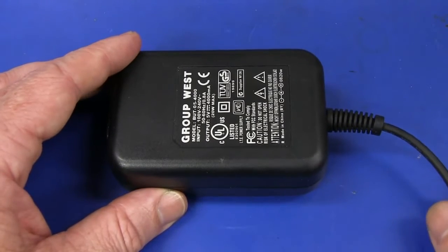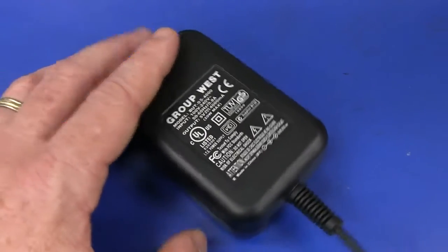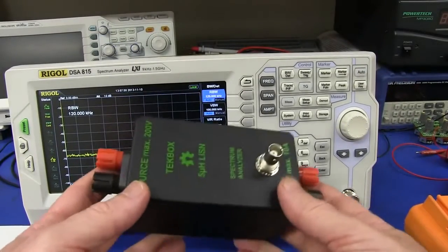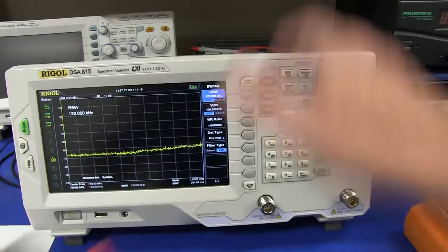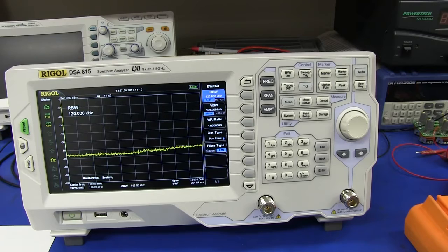So any smart company will do what's called pre-compliance testing, and you can do that in-house with one of these line impedance stabilization networks for conducted measurements, and a cheap-ass spectrum analyzer, which you can get these days, like this Rigol one.